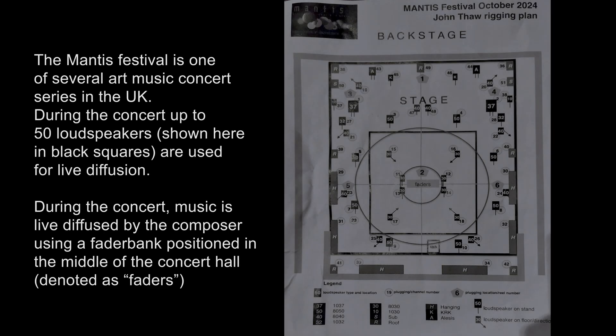Projecting sounds into real spaces using a series of loudspeakers is a well-known practice in art music. So-called live diffusion has a composer sit in the middle of a concert space and use faders on a mixer to distribute the sounds of their music composition in space. Often, live diffusion means a composer has a stereo composition that they then diffuse live over a set of 50 or 100 loudspeakers during the concert. Here's a picture of the speaker setup of Mantis, a biannual concert series of the Novos Research Institute at the University of Manchester.